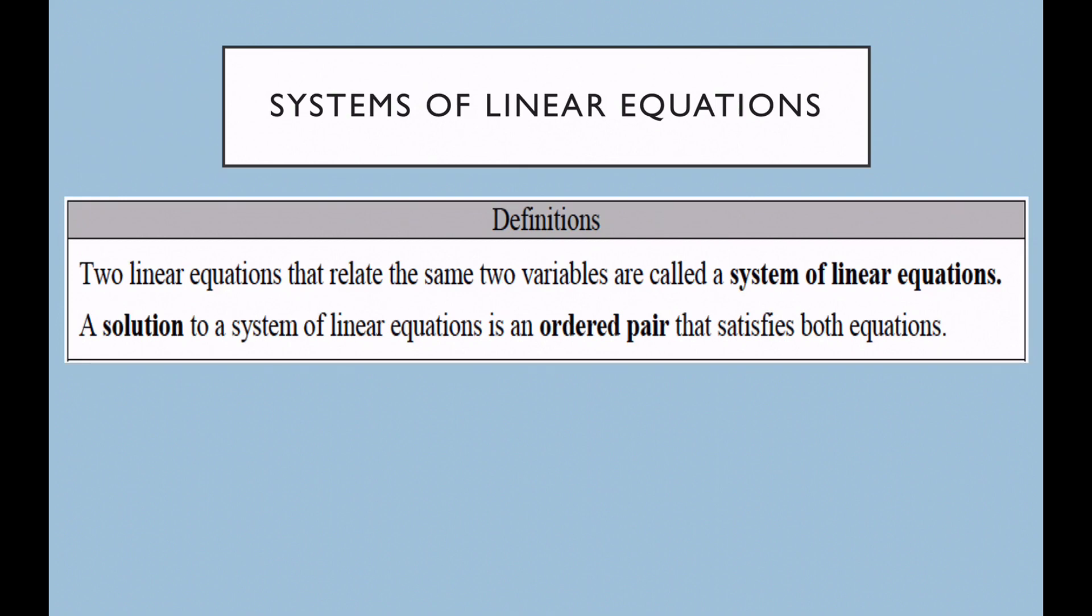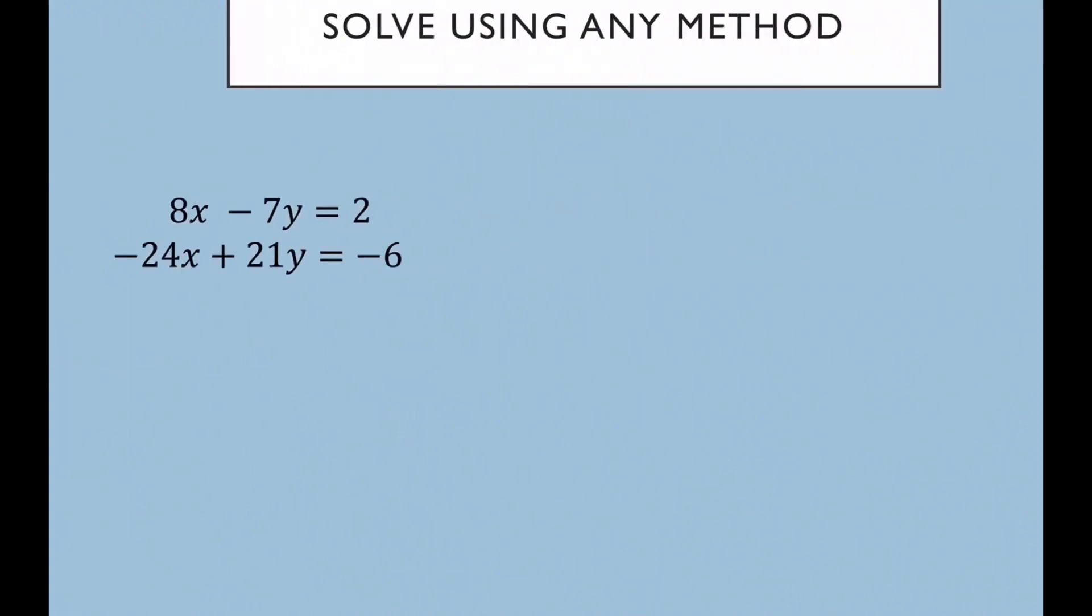So first of all you need to understand that two linear equations that relate the same two variables are called a system of linear equations. So a solution to that system is just literally an ordered pair that satisfies both equations. So let's take a look at what these problems look like.